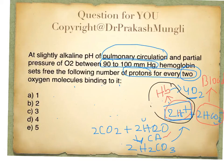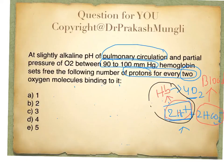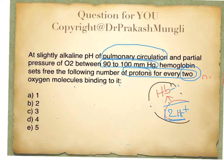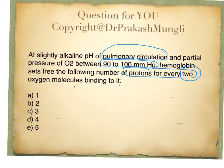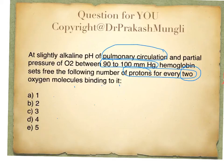To summarize the Bohr shift: in peripheral tissue the partial pressure of CO₂ is high. CO₂ diffuses into the red blood cell and combines with water via carbonic anhydrase to make carbonic acid, which spontaneously dissociates into two bicarbonate ions and two protons. These two protons bind to the histidine residues of hemoglobin, stabilizing it in the T-state, causing the release of four oxygen molecules.